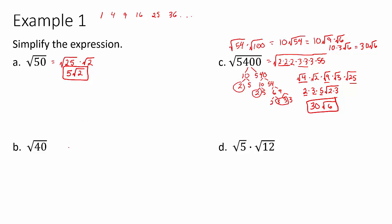For smaller numbers like the square root of 40, we can either make a factor tree and look for pairs, or just recognize that 4 is a perfect square that divides into 40. If we're not sure which perfect square goes in, we can check 4, then 9, then 16, then 25, and so on. The square root of 4 is 2, and the square root of 10 doesn't simplify further because 10 = 2 × 5 with no perfect square factor, so the answer is 2√10.